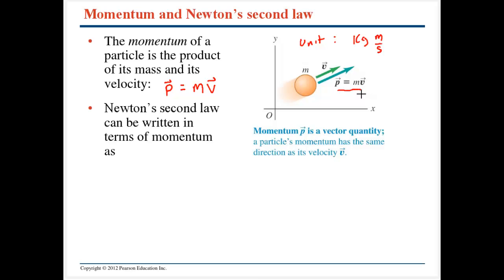If we think about a couple of objects moving with the same velocity, obviously a Mack truck moving at 10 miles per hour is going to have a lot more momentum than a VW bug moving at 10 miles per hour. It simply has more momentum.